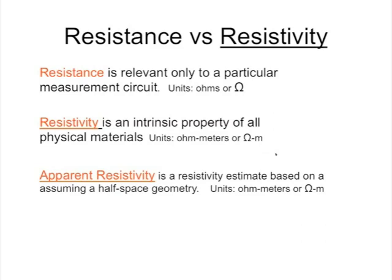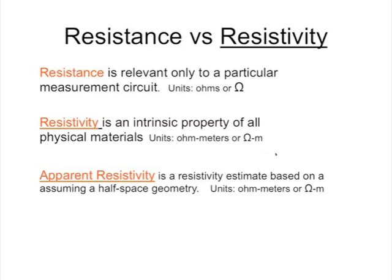As a reminder: resistance versus resistivity versus apparent resistivity. To get the resistance of a length of wire, we can also determine resistivity by doing an experiment and solving the equation for rho instead of R. We have a length of material, we know the amps pumped through it, we measure the resistance of the circuit, and if you take the resistance, divide by the length, and multiply by the cross-sectional area, you get the resistivity. That's how we'll measure resistivity, and that's what the next lecture will be on as I introduce resistivity survey methods.